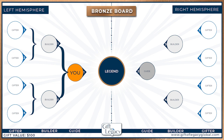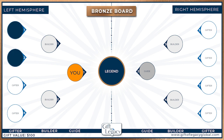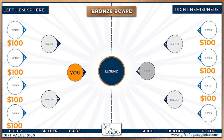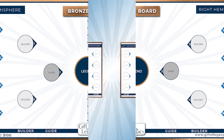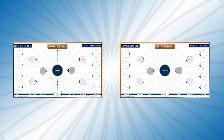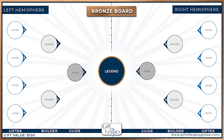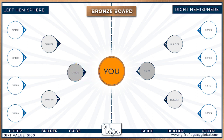The Builders will now invite two new Gifters each, and the new Gifters will gift a total of $800 to the Legend of the board. Your purpose as a Guide is simply to support your Builders and assist them with their invitees. Again, the left and right hemispheres split to start two new boards after the eight Gifters have sent their unconditional gifts and all positions advance. This means you have now moved to the Legend position, and it will be your turn to receive gifts.